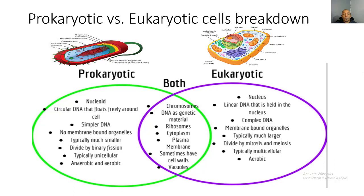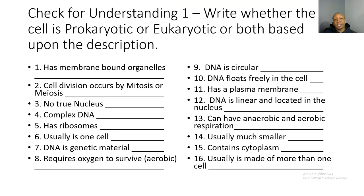Now let's look at what prokaryotic and eukaryotic cells have in common. Both have chromosomes and both use DNA as their genetic material. Both have ribosomes, which make proteins, and both have cytoplasm — the jelly-like substance containing their organelles. Both have a plasma membrane, and both sometimes have cell walls. In eukaryotic cells, plant cells have cell walls but animal cells do not. Both also contain vacuoles.